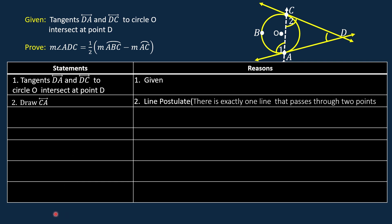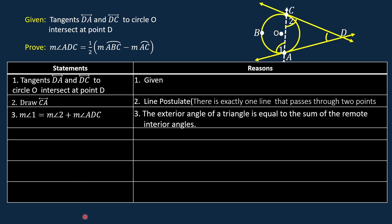For statement number 3, the measure of angle 1 is equal to the measure of angle 2 plus the measure of angle ADC. The reason: the exterior angle of a triangle is equal to the sum of the remote interior angles.